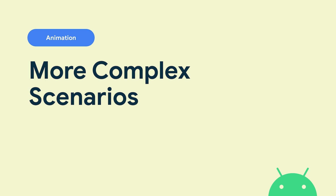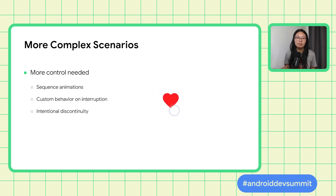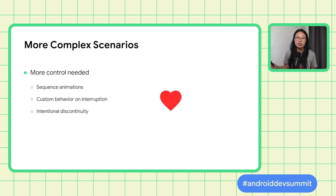Hi, my name is Doris Liu. I'm a software engineer on the Android UI toolkit team. Yuichi has demonstrated a variety of state-based animation APIs — they're really helpful for animating state changes for common use cases. But what about more complex scenarios where you might need custom behaviors? For example, you might need more control over the animations, you might need to sequence animations or sets of animations, or you might want custom behavior when the animation gets interrupted. State-based animation APIs maintain continuity for animation value and velocity when interrupted, but in some cases you might prefer discontinuity to emphasize gesture or responsiveness.